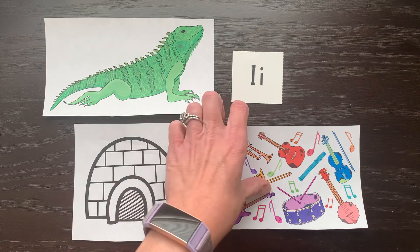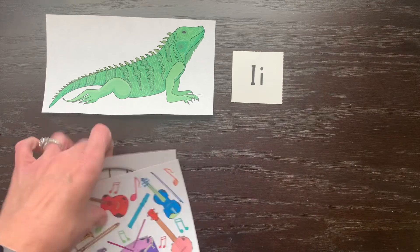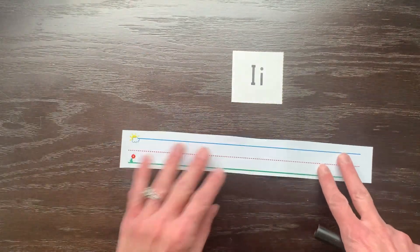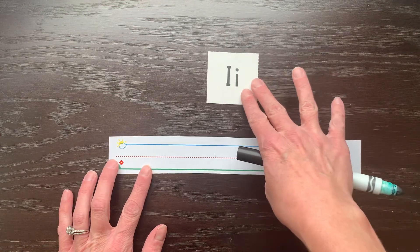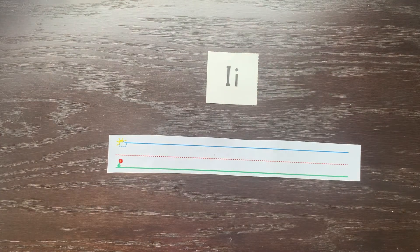All right Little Sprouts, let's learn how to write the letter I. Letter I is pretty easy because it's all straight lines. Let's start with a capital I.